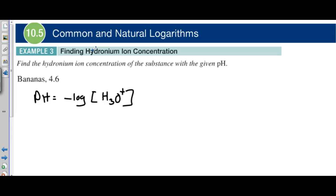In this example we're going to be finding the hydrogen ion concentration, not the pH level, which is what we did in example number two. So given that we have this banana's pH level, we now need to find its hydrogen ion. This is just a simple plug-in and then we'll solve it.